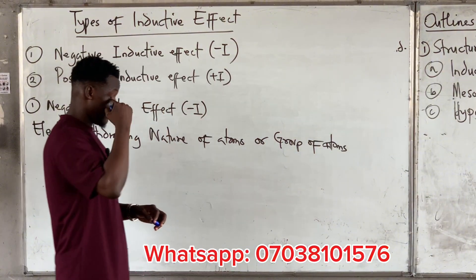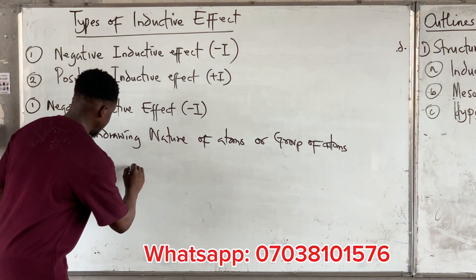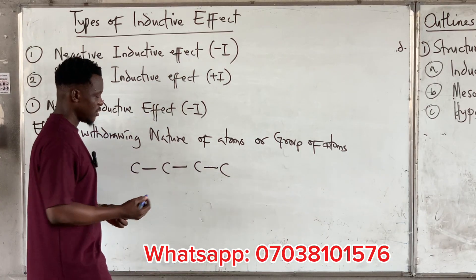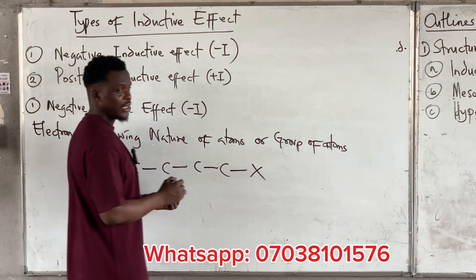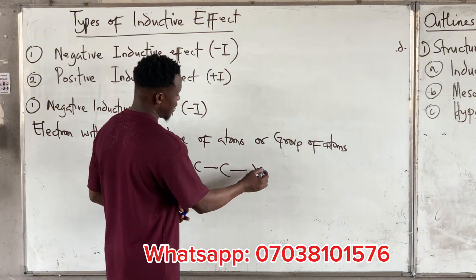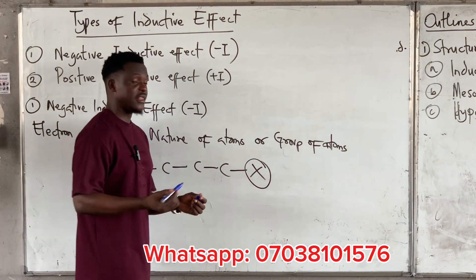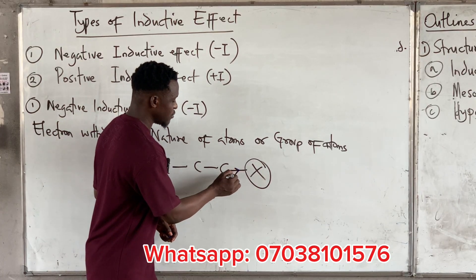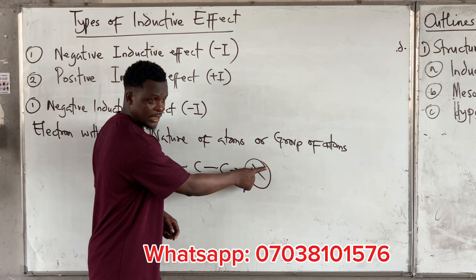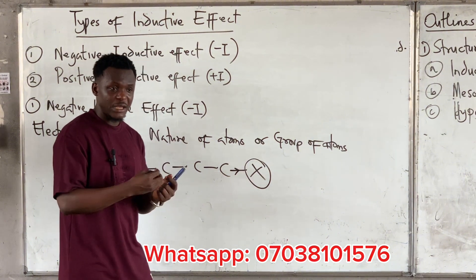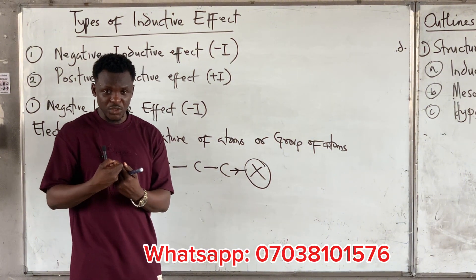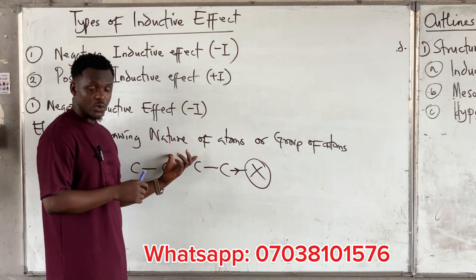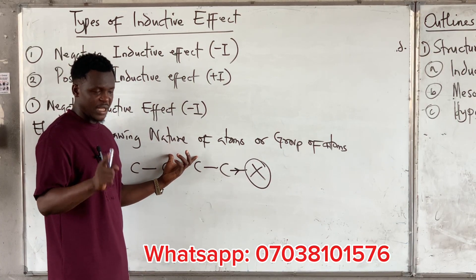Let me show something. Let's assume I have a compound, and all of a sudden I have X attached to it. If this X withdraws electrons from this carbon towards itself, then X is simply exhibiting what we call electron-withdrawing nature. And the type of effect that this group is going to be exhibiting is called negative inductive effect.